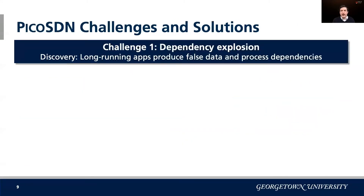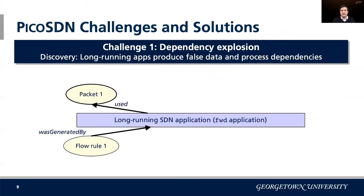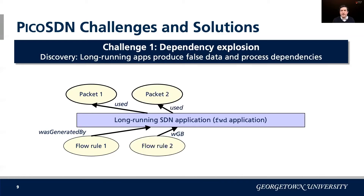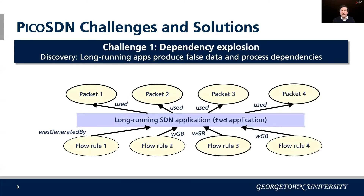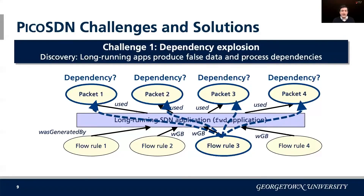Suppose we model each SDN app as a long-running process. An app process, represented by a rectangle, uses a packet — an object represented by an oval — and generates a flow rule. Starting with flow rule one, it was generated by the forwarding application, which used packet one. Sometime later, this process repeats with a second incoming packet generating a second flow rule, and so on. An administrator spots a bad flow rule and wants to trace its history. It's clear this app was involved, but now every packet as input is also involved as a result of this long-running process model.